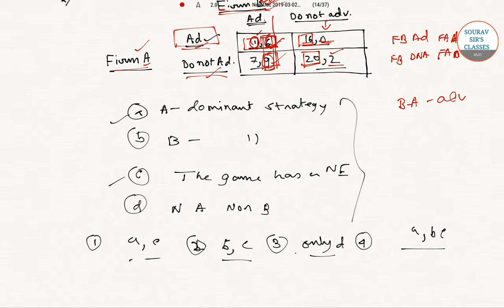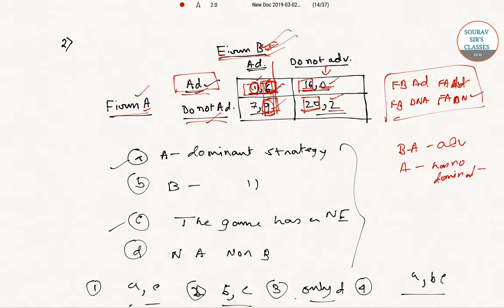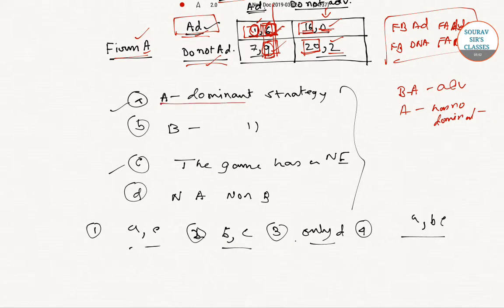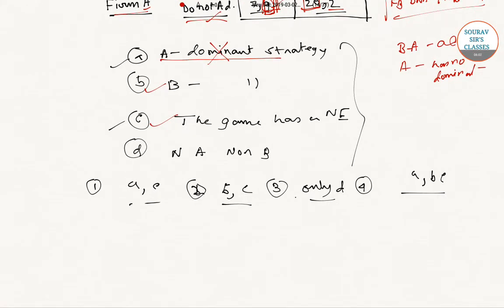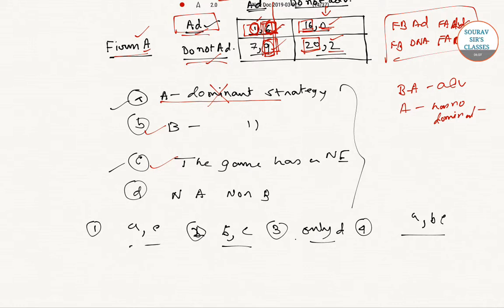Firm A has no dominant strategy. There is also a Nash equilibrium to this game. So we can conclude: option A — Firm A has a dominant strategy — is not correct. Option B — Firm B has a dominant strategy — is correct. Option C — the game has a Nash equilibrium — is also correct. Therefore, the right answer for question number 2 is option 2, which is B, C.